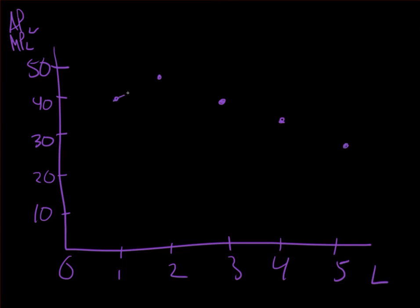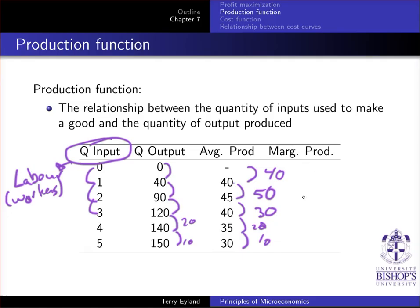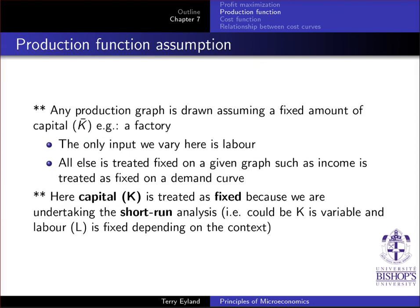If I link these up, it's not perfect but it gives me a general idea of what the average productivity of labor curve would look like. If I then take the information for marginal productivity of labor, I have 40, 50, 30, 20, 10.